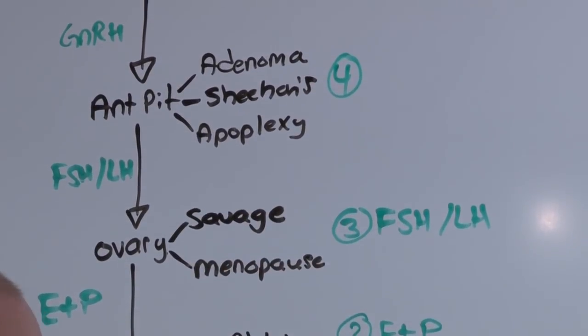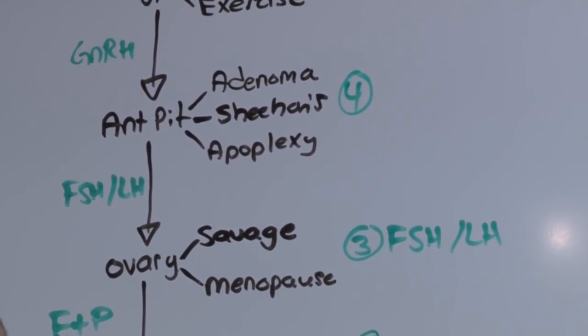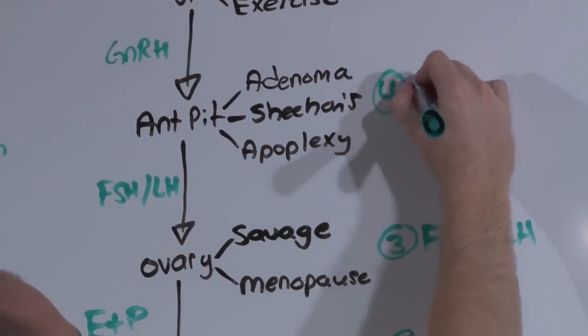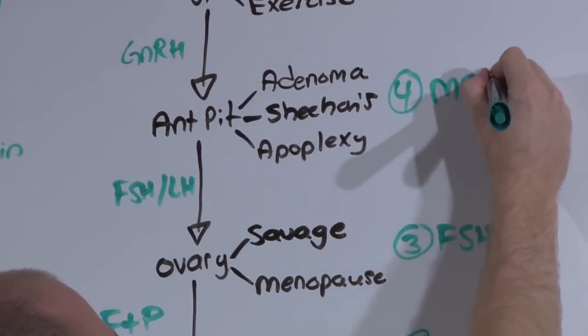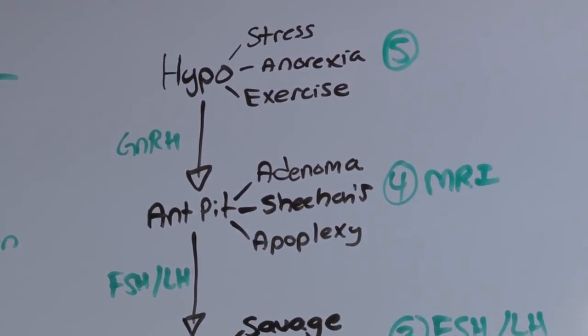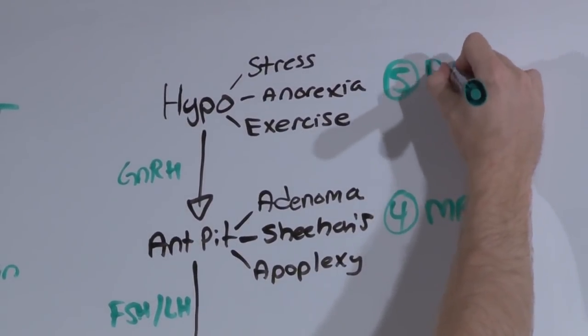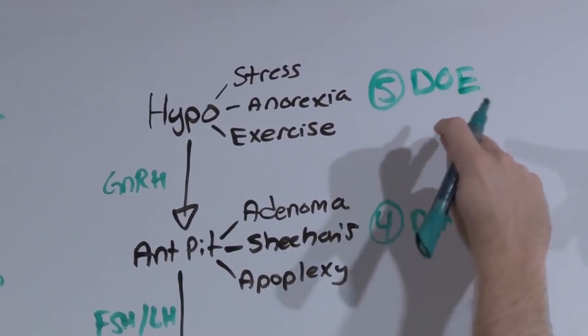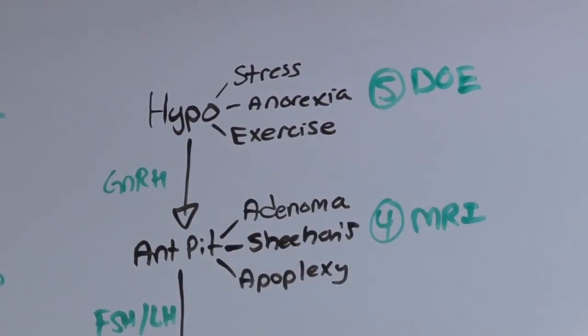In order to assess the anterior pituitary, you have to decide, is there a mass or is there necrosis? This is done with an MRI. And finally, the hypothalamus. If all of this stuff doesn't tell you your answer, this is the diagnosis of exclusion. And probably could have been identified on history and physical alone.